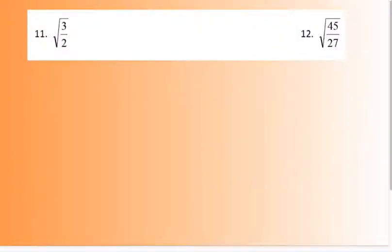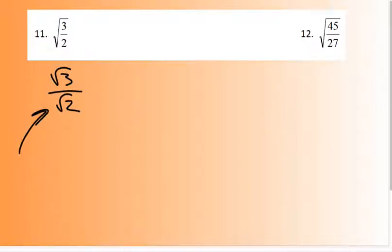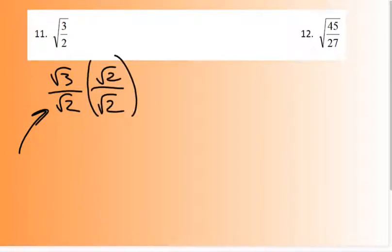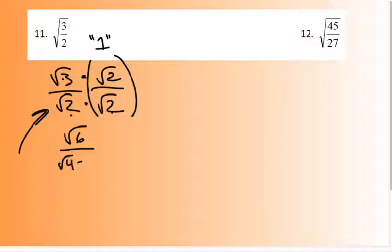When dividing with radicals, you've got to rationalize the denominator. For number 11, √3 over √2: I cannot leave √2 in the denominator. So multiply by √2 over √2, which equals 1. Square root of 3 times √2 is √6. Square root of 2 times √2 is √4, which is just 2. So the answer is √6 over 2.